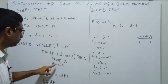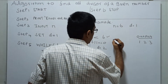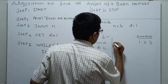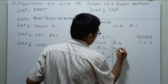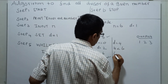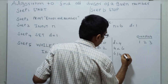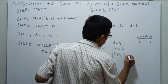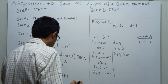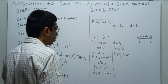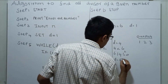3 is also completely divided. So D = D + 1, D becomes 4 now. 4 less than 6: 6 mod 4 is not equal to 0, because the remainder is 2. It is not equal to 0, so it won't print. D = D + 1, D will get incremented to 5.